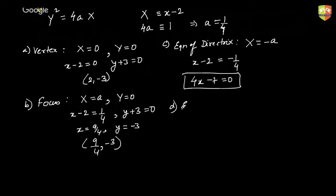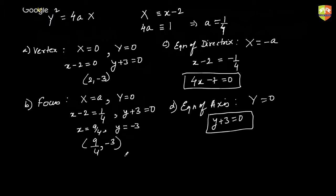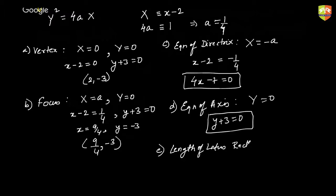Next is equation of the axis. The axis equation is y equal to 0, so y plus 3 equal to 0 is the equation of the axis. And finally, the length of latus rectum is 4a, which is 4 times 1/4, which is 1 unit.